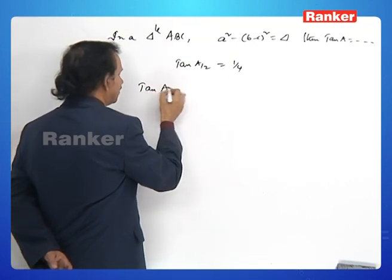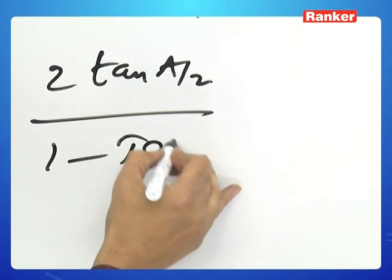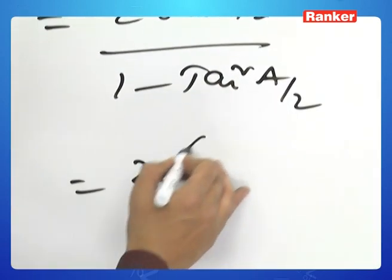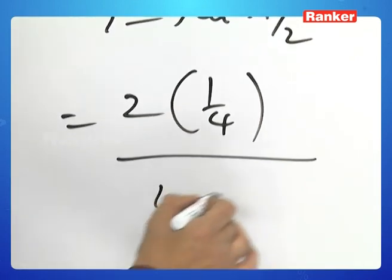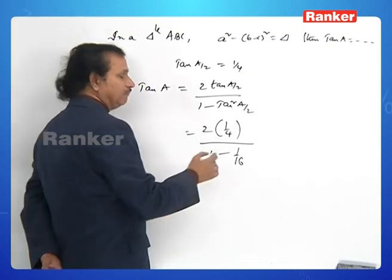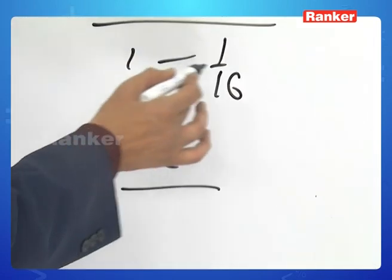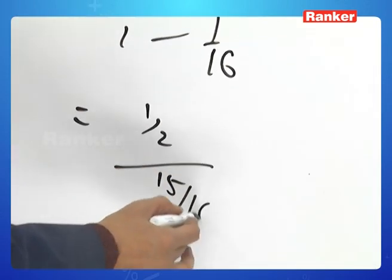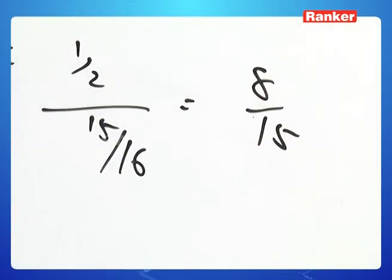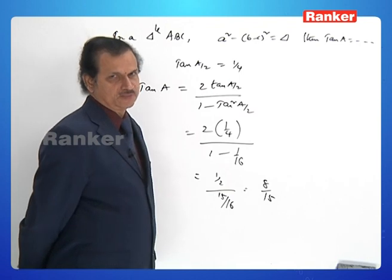We need tan A, not tan(A/2). Using tan A = 2 tan(A/2)/(1 − tan²(A/2)) = (2 × 1/4)/(1 − 1/16) = (1/2)/(15/16) = 8/15. The value of tan A is 8/15.